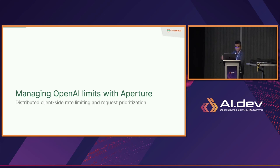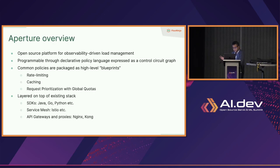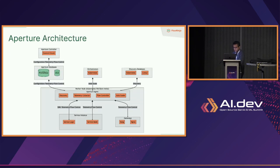Aperture is an open source platform providing observability-driven load management capabilities. The primary focus is rate limiting, caching, and request prioritization with quotas — think of it as load management as a service, a sidecar that runs alongside your existing stack. You can use SDKs like Python and TypeScript, or service meshes like Istio and Envoy, to insert the solution with a proxy. There are multiple ways to add load management capabilities into your existing stack.